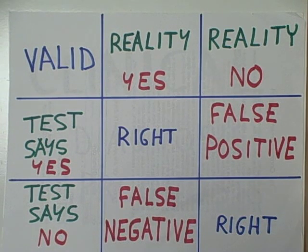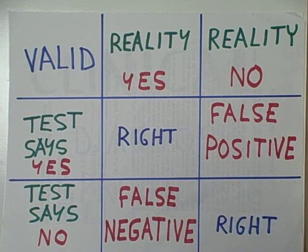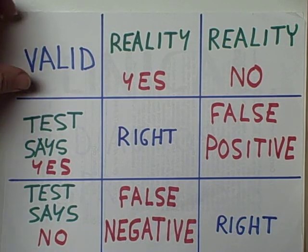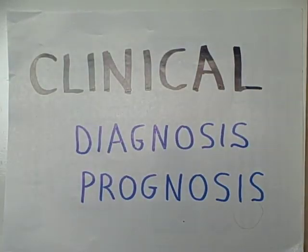If most of the patients are classified correctly in this cell and this cell, the test has some validity. How valid the test is depends upon the strength of the correlation between what the test says and what our established measure of reality said.